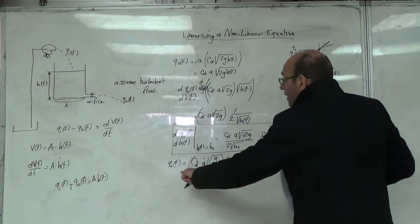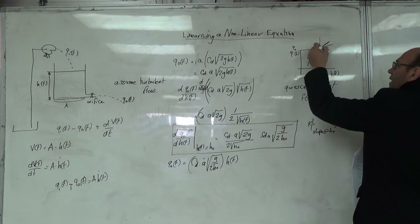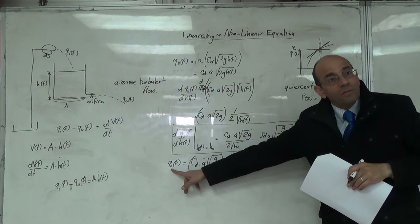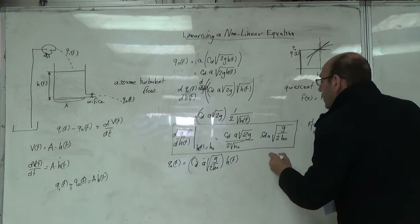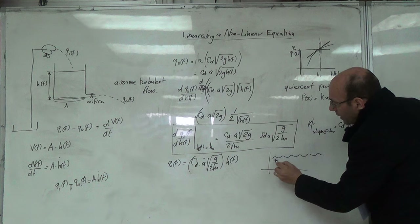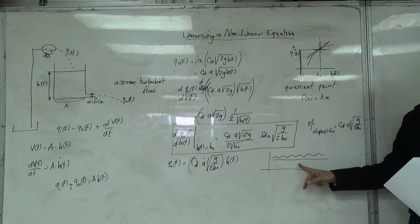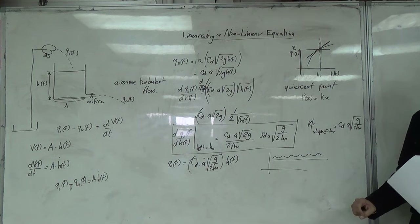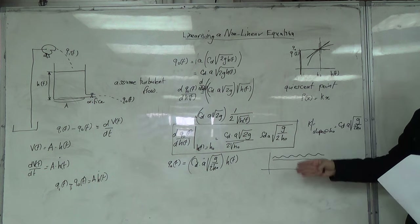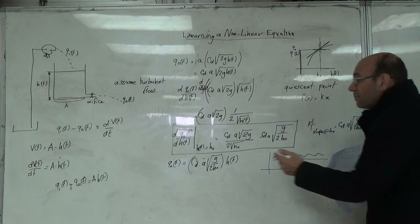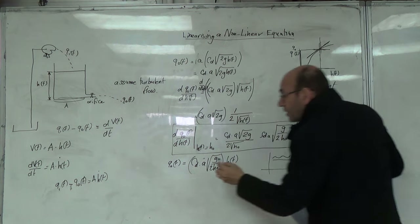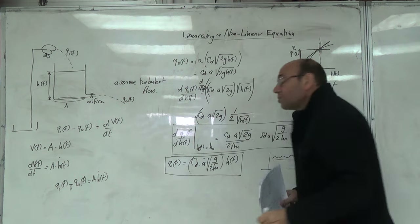We transformed this into a straight line, essentially shifting the axis to the operating point. When H is zero, Q_naught is also zero. We are only looking at dynamic values — changes around the operating point — not constant values. This is like an AC signal superimposed on a DC operating point, similar to what we do with transistors and amplifiers. The constant values — Q_naught and H_naught — are known; we are only interested in the dynamic variations around them.